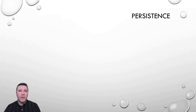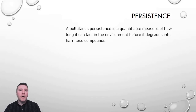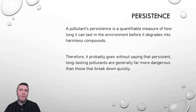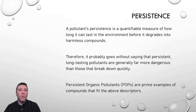The first criterion to focus on is persistence. A pollutant's persistence is a quantifiable measure of how long it's going to take for the pollutant to break down into harmless compounds. Therefore, it probably goes without saying that the longer lasting a pollutant is, the more potential harm it can cause. We're going to be focusing specifically on organic pollutants, and we classify them as persistent organic pollutants, or POPs.